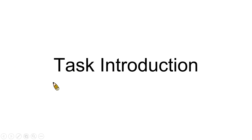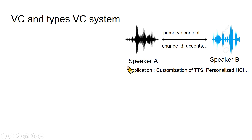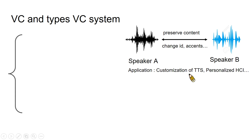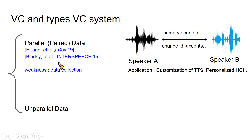Let's introduce voice conversion. Voice conversion is a task to transform the audio of speaker A into speaker B, but preserve its linguistic content. It has many applications like customization of text-to-speech systems, personalized HCI, and privacy protection. In general, we divide the task into two categories: parallel data and unparalleled data. Paralleled data means that the speakers in the dataset read the same corpus, and such datasets are hard to collect. Unparalleled data don't have this constraint.